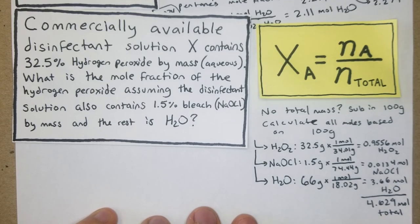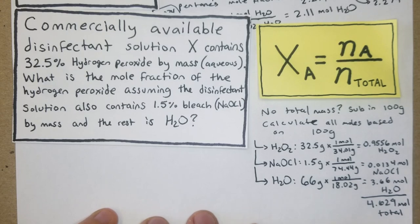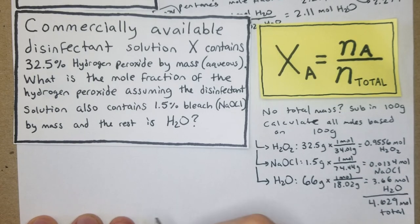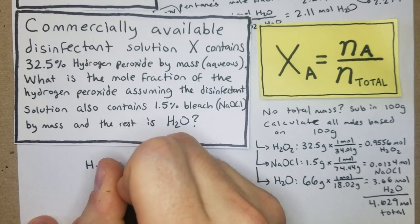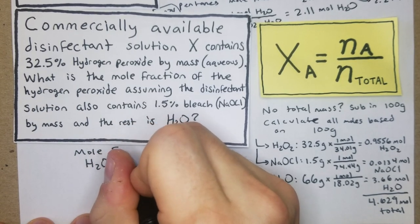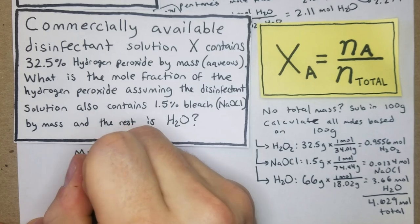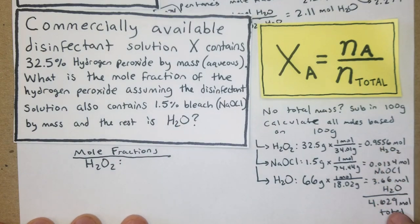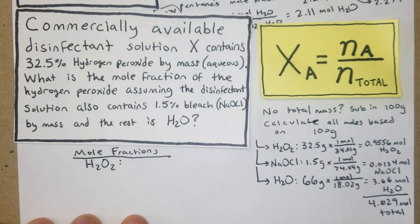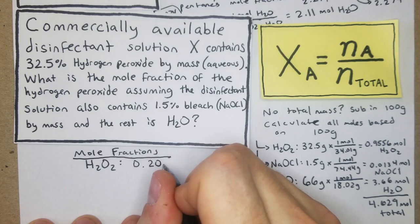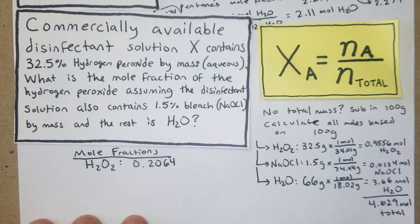Now we have the total number of moles based on the 100 grams that we substituted in. From there we can take it to this formula and do it per each of them. I'll make a table here: mole fractions. H2O2 is going to be - we're just going to take this and divide it by that - so we have 0.9556 divided by 4.629, which gives us 0.2064.